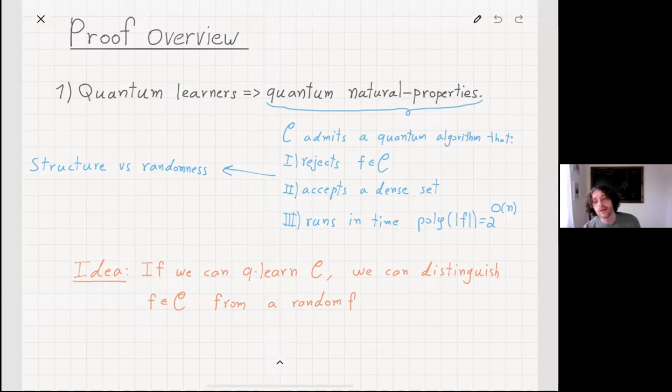Roughly formally, it's an algorithm that runs in time which is polynomial in the size of the input, which is a Boolean function. What it does, it rejects a certain class that we want, so it's a natural property for a circuit class C, and it accepts some dense set. The way I kind of like to think about it is that because it's a dense set, it means that the algorithm accepts random functions and rejects functions that belong to the class.